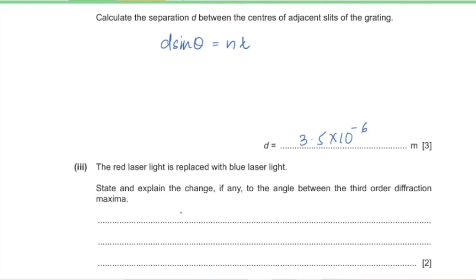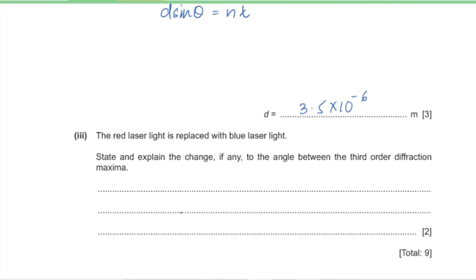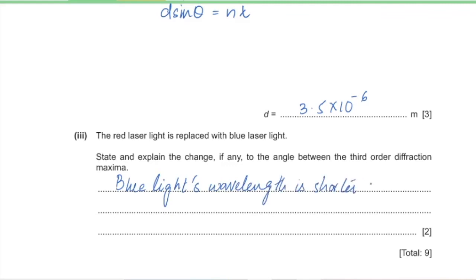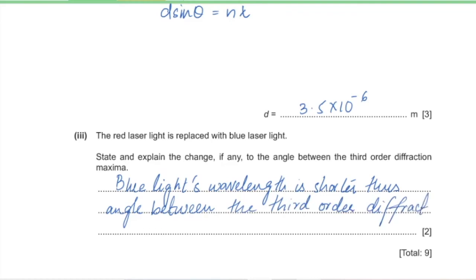Part 3: the red laser is replaced with blue laser light. State and explain the change to the angle between the third-order diffraction maxima. Blue light has a shorter wavelength than red light. Since nλ = d sinθ and d is fixed, a shorter λ means sinθ decreases, so the angle between the third-order diffraction maxima decreases.